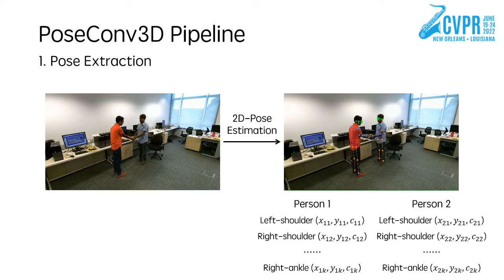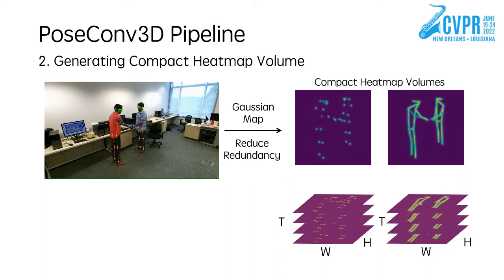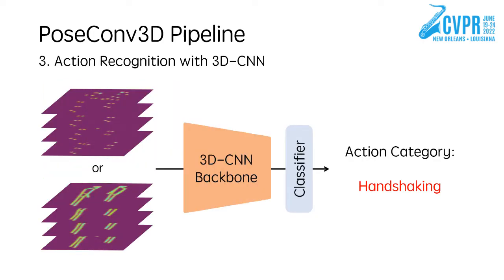Basically, the framework consists of three steps. First, a top-down pose estimator is used for extracting high-quality 2D poses. Second, 2D pose heatmaps are stacked along the temporal dimension to generate 3D heatmap volumes. Finally, a 3D CNN is adopted to recognize actions.